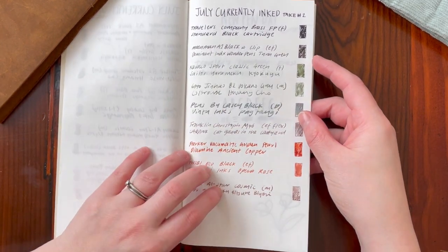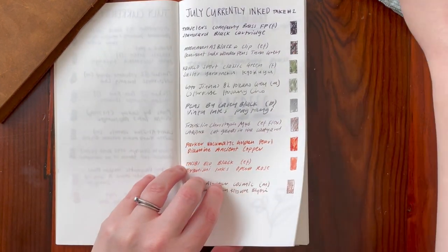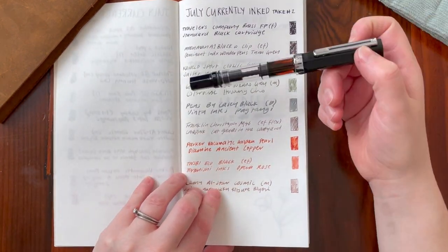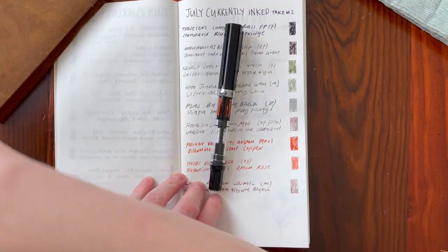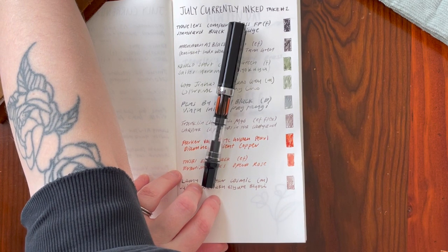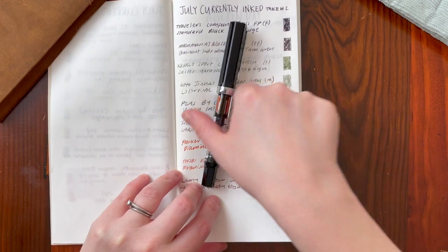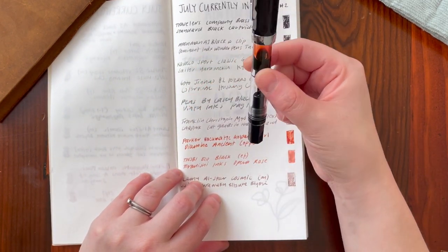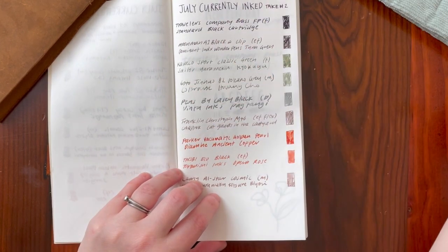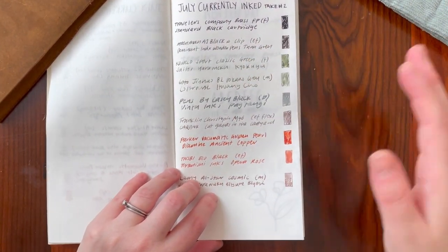First up, favorites from this month without a doubt would have to be the Twsbi Eco with Opera Rose. That's continuing. That is continuing on to this month. I've got like half left and I actually wanted to bring it across two months, so really excited. I don't have any more of that sample left.